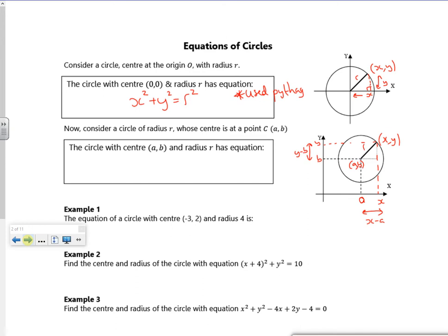So same idea, x minus a, that's the length going across, squared. Y minus b, that's the length going up, squared, is equal to r squared. So I've just used Pythagoras again. So that's where your equations of circles come from. So it's mapping a circle going around.